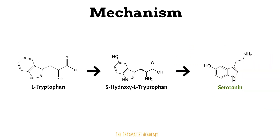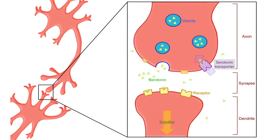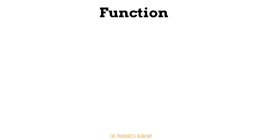As a neurotransmitter, serotonin transmits messages from nerve cells. A neuron releases serotonin as the messenger to act on serotonin receptors, leading to a response or function. The function depends on which part of the body serotonin is working in.